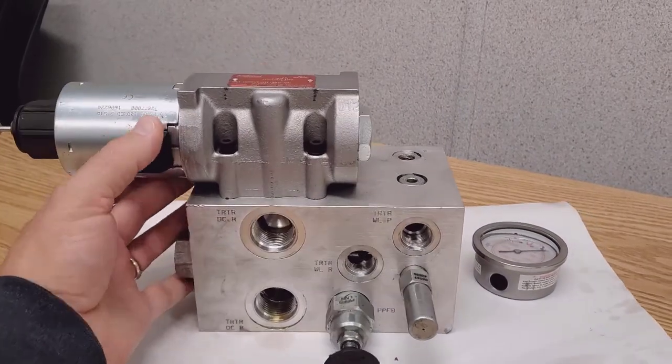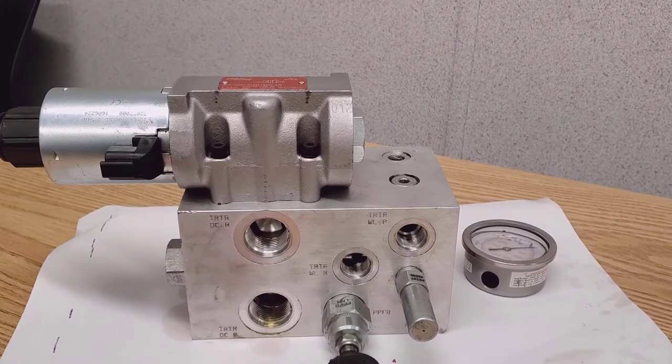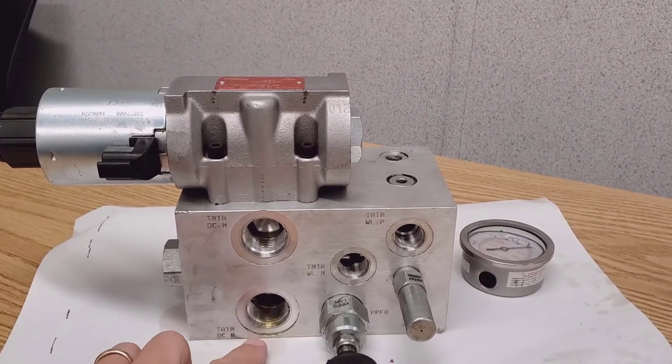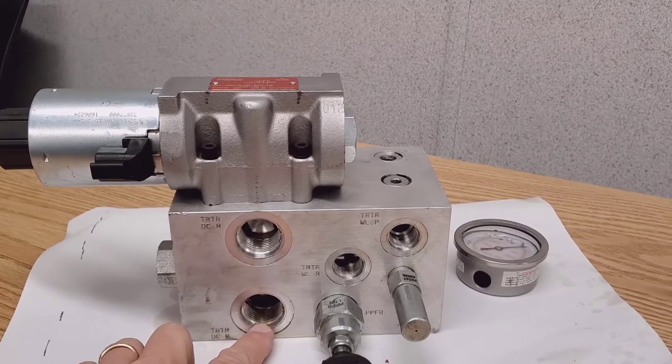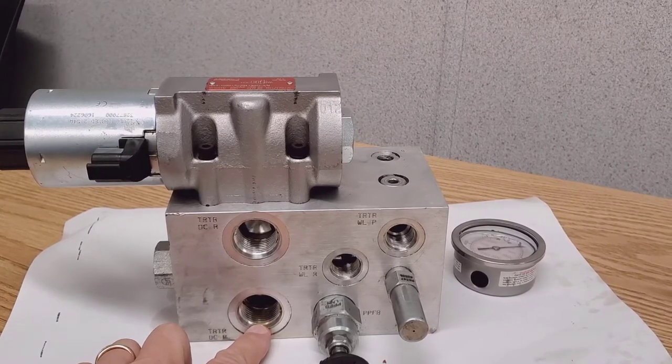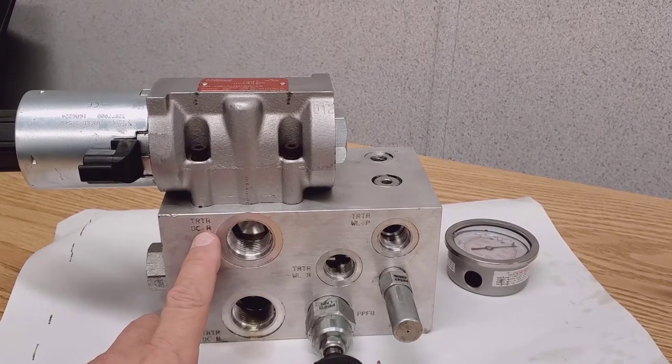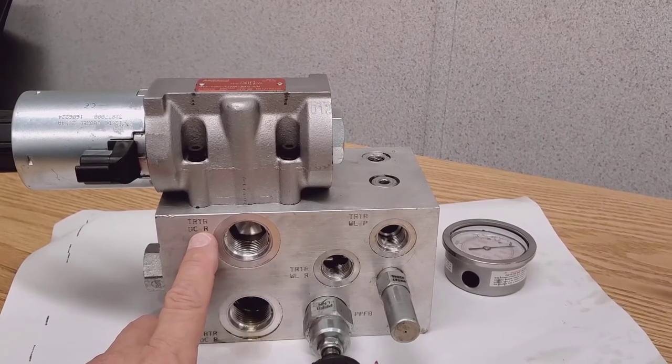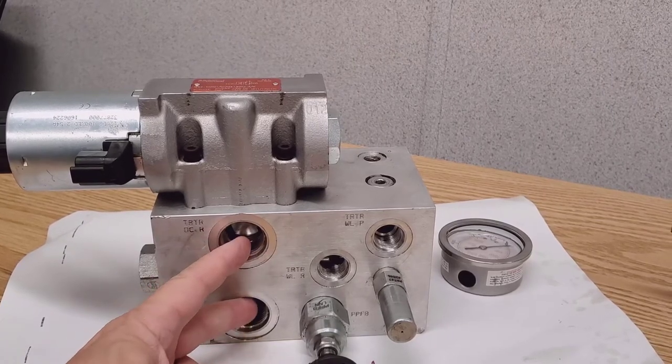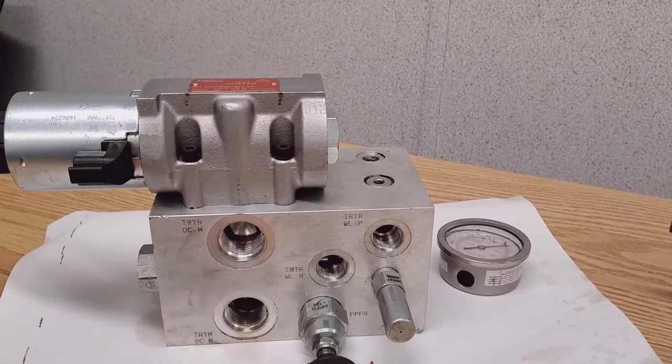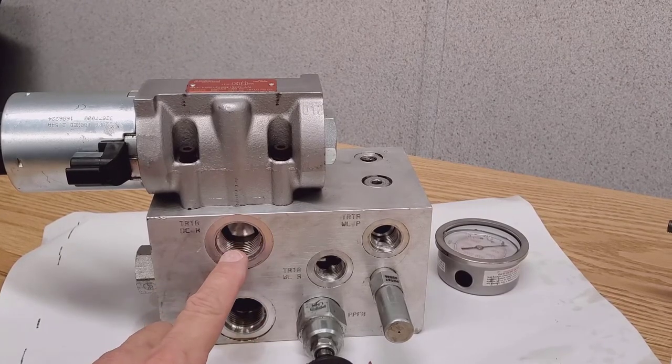As we can see by our valve block, we have fittings coming in from the tractor remote going into TR, TR, DCP. That's a pressure port for the depth control and directional control. And then the return line is TR, TR, DCR. It's crucial that those two be connected in the proper order. Always have to have pressure coming in here and return coming in here.